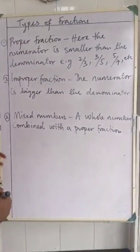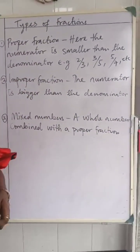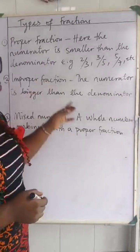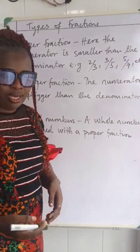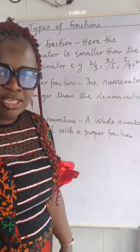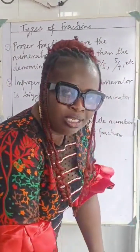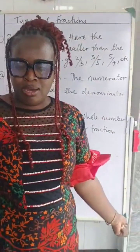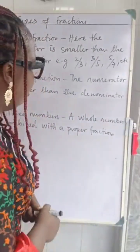Let's look at number two: improper fraction. An improper fraction is where the numerator is bigger. You can imagine a child backing the mom or the dad — is it normal? No, it's improper.